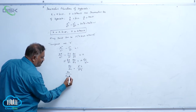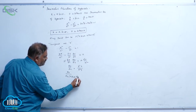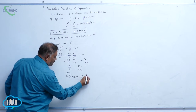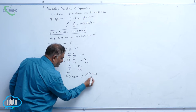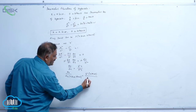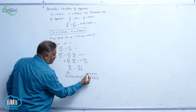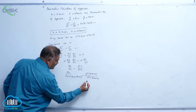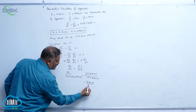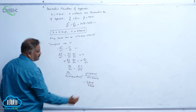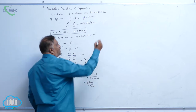So dy by dx at the point (a secant theta, b tan theta) is b squared times a secant theta divided by a squared times b tan theta. After cancellation, this gives b secant theta divided by a tan theta, which is the slope of the tangent.